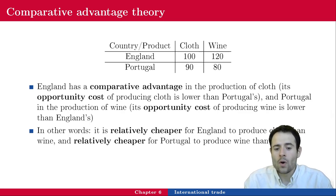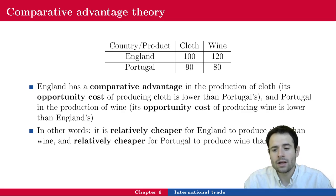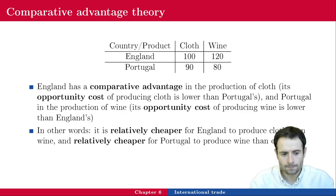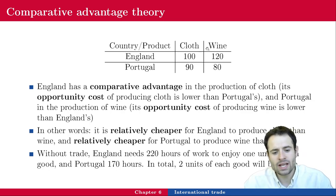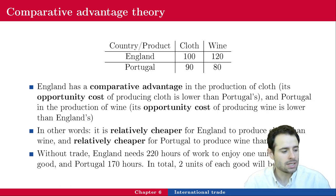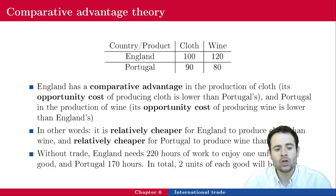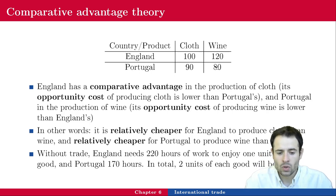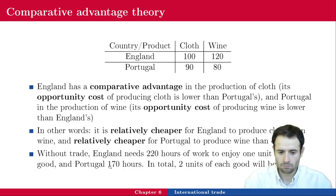The idea is that it is relatively cheaper for England to produce cloth than wine, and relatively cheaper for Portugal to produce wine than cloth. Without trade, England needs 220 hours of work to produce one unit of each good, and Portugal needs 170 hours. Together they produce two units of each good, with England making one of each and Portugal making one of each.